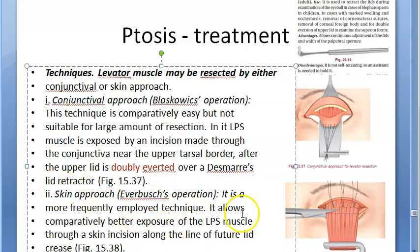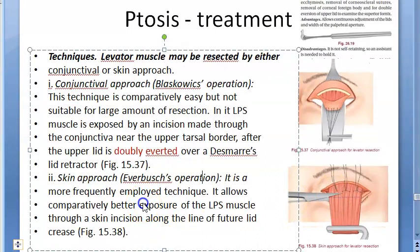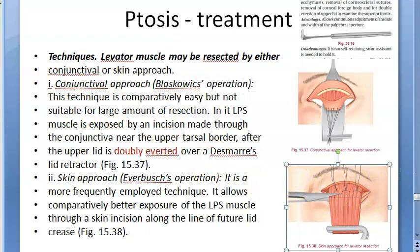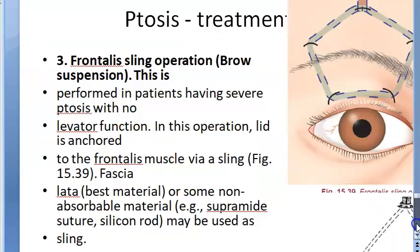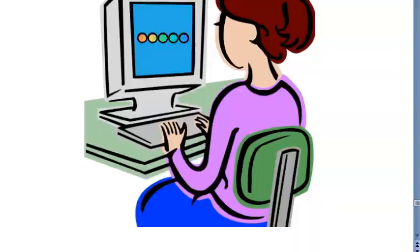The skin approach is called the Everbuche's operation and is more frequently used. More muscle can be resected through the skin approach compared to the conjunctival approach. The Desmares retractor is specifically mentioned for the conjunctival approach, while the skin approach does not specifically mention a retractor.